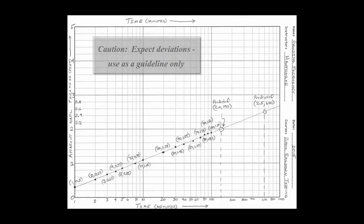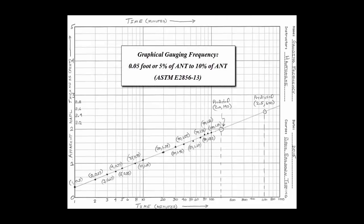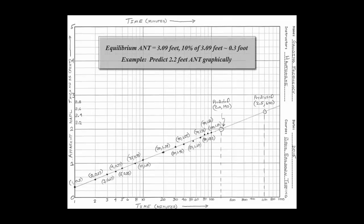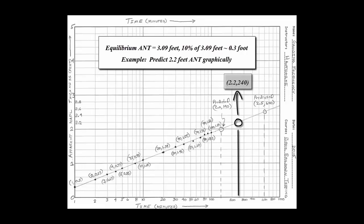Use target gauging intervals from 5 one-hundredths of a foot, or 5% of the equilibrium apparent NAPL thickness, up to 10% of the equilibrium thickness. For example, if the equilibrium apparent NAPL thickness is 3.09 feet, then 10% is 0.3 feet. For this test, the apparent NAPL thickness should reach 2.2 feet at about 240 minutes.